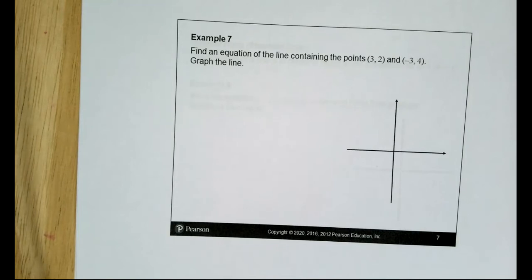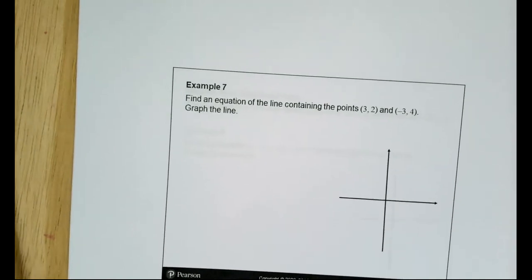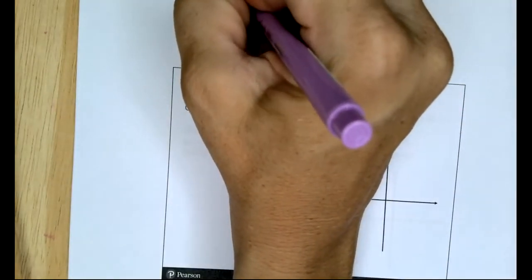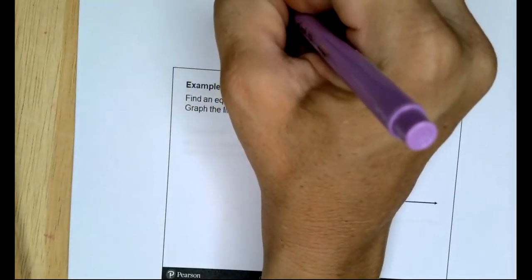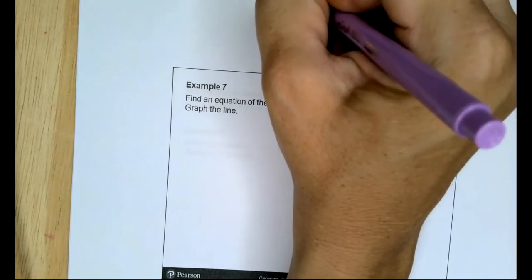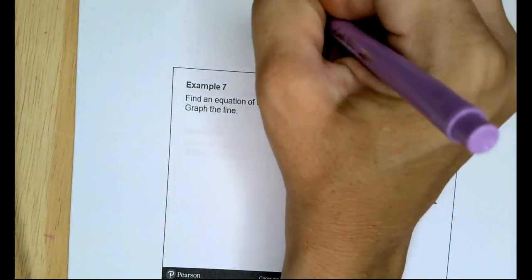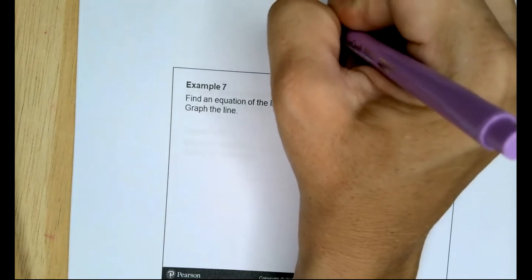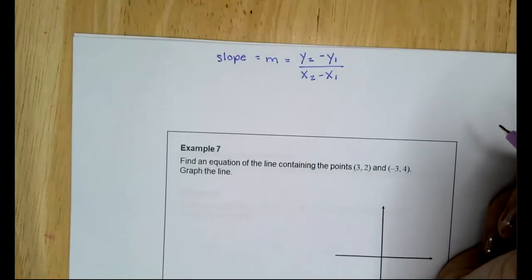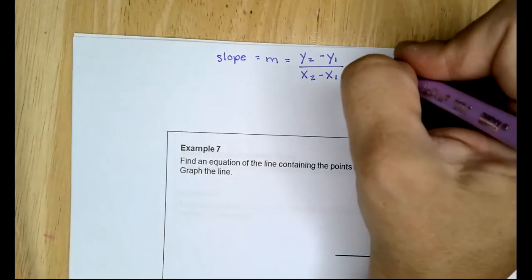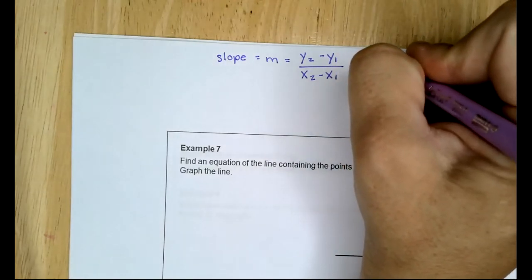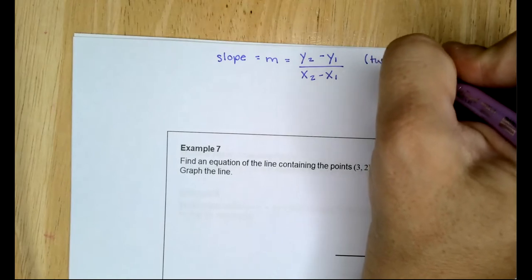Example 7: Find the equation of the line containing the points (3, 2) and (-3, 4). We only have two points, so we must start with the slope formula m = (y2 − y1) / (x2 − x1). We need two points to find slope, then one point and slope for point-slope form, and slope plus y-intercept for slope-intercept form.